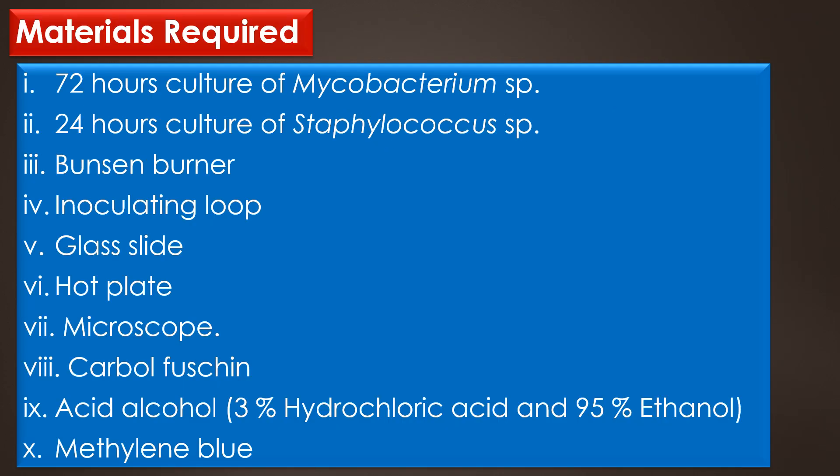Materials required for the acid-fast staining are: 72-hour culture of Mycobacterium species, 24-hour culture of Staphylococcus species, Bunsen burner, inoculating loop, glass slide, hot plate, microscope, carbolfuchsin, and acid-alcohol — prepared using 3% hydrochloric acid and 95% ethanol — and methylene blue.